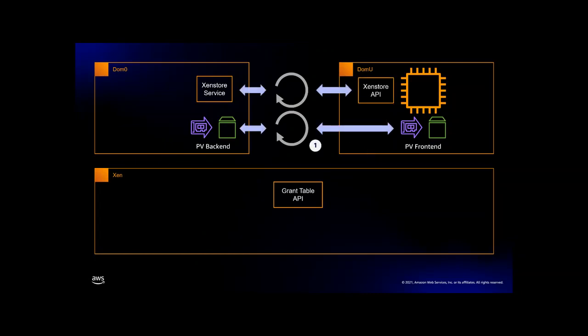Back to the frontends and backends — there's more to passing data than setting up a shared memory buffer. There needs to be some way to control copying of data into and out of that buffer. The frontend needs to tell the backend when there's data to process, and the backend needs to tell the frontend when it's finished processing. This happens using another hypercall API (labeled 2) called the event channel API — an interrupt mechanism that allows the frontend and backend to signal each other. That completes our picture of the core environment that Xen provides for storage and networking access using PV devices.